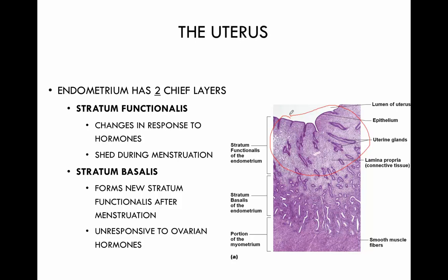If fertilization doesn't happen, there will be a shift in hormone concentrations and we will shed the stratum functionalis. That is what takes place during menstruation — a female is losing that innermost layer, the stratum functionalis. As we shed the stratum functionalis, constant regeneration takes place in the stratum basalis, which becomes the new stratum functionalis after menstruation. The stratum basalis is not responding to estrogen or progesterone, so no real changes occur there other than what's necessary as it becomes the apical layer.